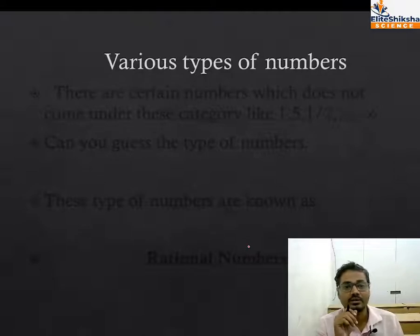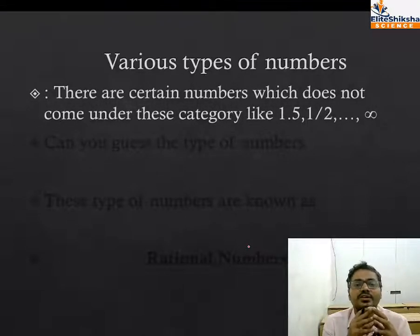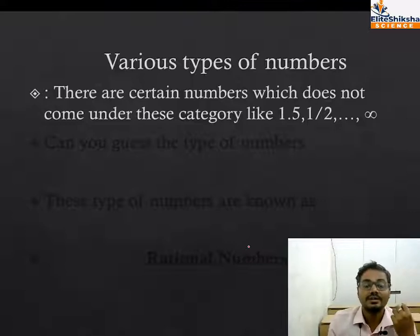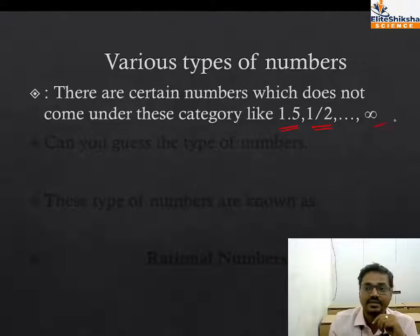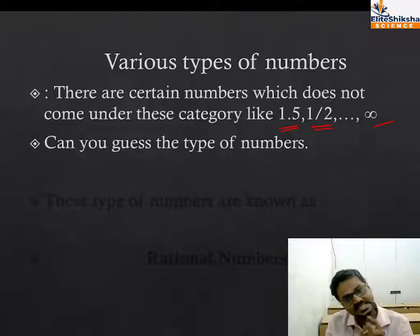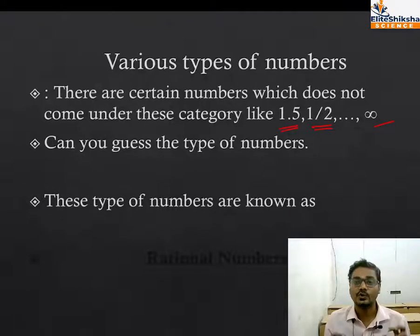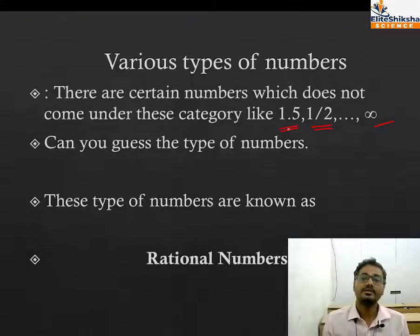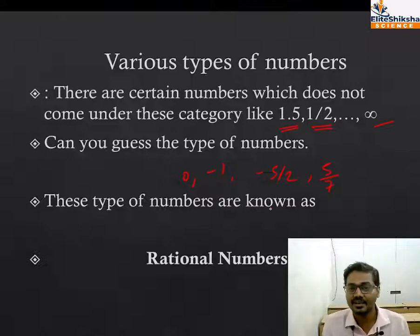Now there are some numbers which do not come under these categories, like 1.5. Can you guess the type of numbers? Very good! Most students say yes sir, these types of numbers are known as rational numbers. Any number like 1.5, 1 by 2, zero, minus 1, minus 5 by 2, plus 5 by 7 - all of these are rational numbers.